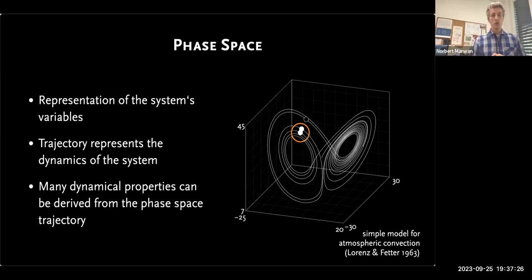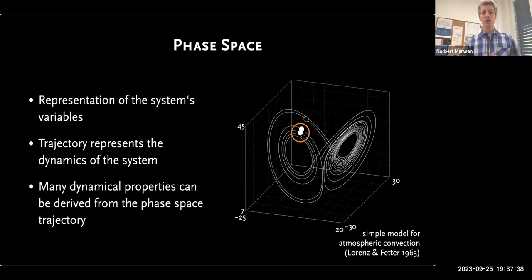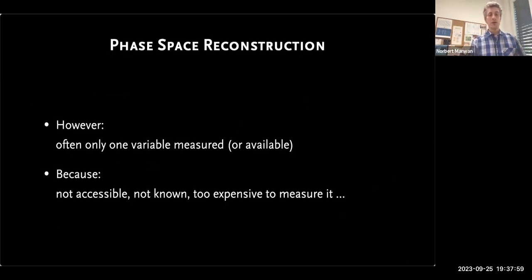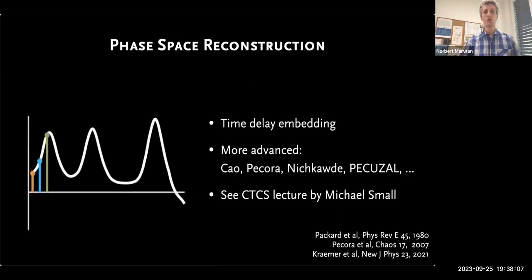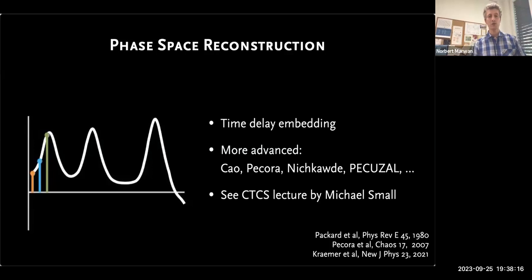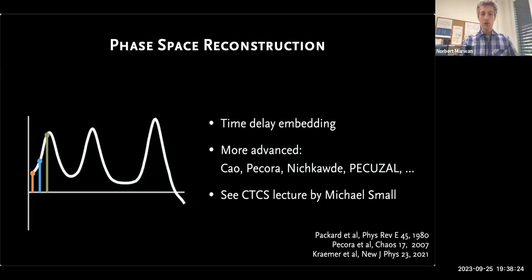The foundation of recurrence analysis is the phase space and the phase space trajectory. The phase space is a representation of the dynamics of a physical system, where state variables represent the dimensions of the phase space. The phase space idea is used for many different investigations in dynamical systems theory, for example to estimate dimensions or Lyapunov exponents. The main problem is that if we have only one observed time series, we don't have a phase space — we need to reconstruct it using, for example, time delay embedding. I would like to point to the CTCS lecture by Michael Small on phase space reconstruction.